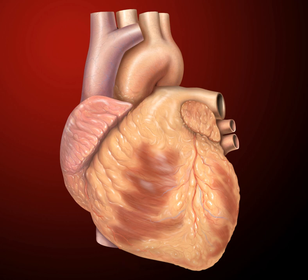The back surface of the heart lies near the vertebral column, and the front surface sits behind the sternum and rib cartilages. The upper part of the heart is the attachment point for several large blood vessels: the venae cavae, aorta, and pulmonary trunk. The upper part of the heart is located at the level of the third costal cartilage.